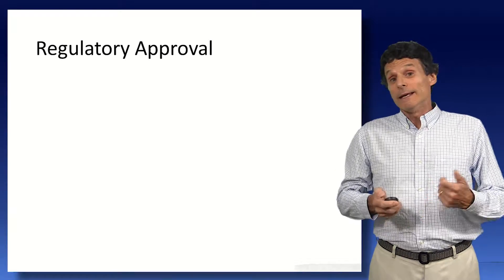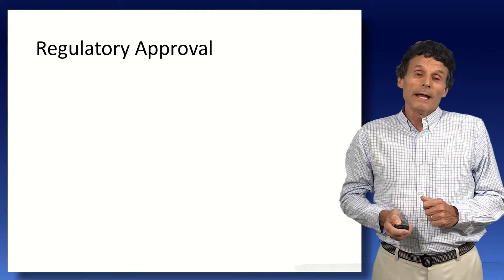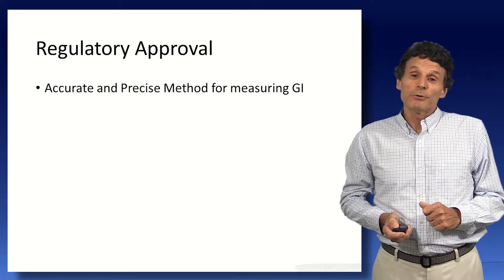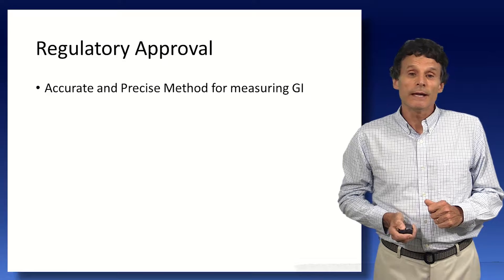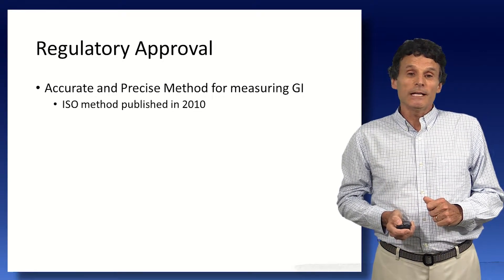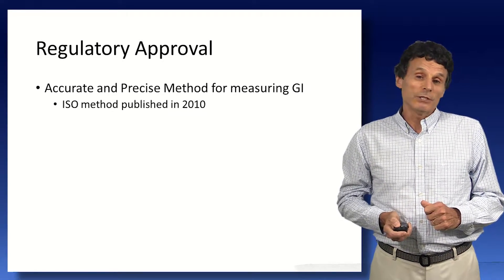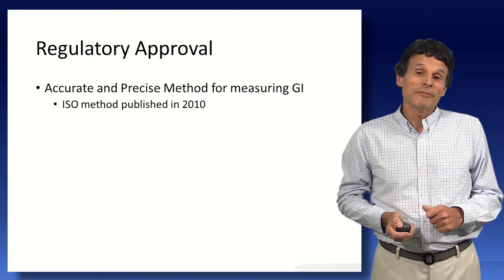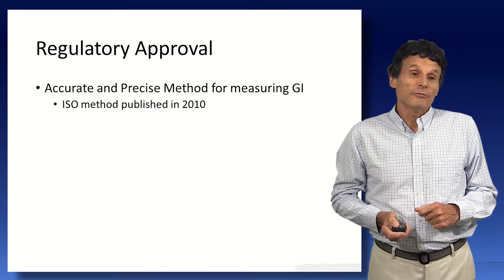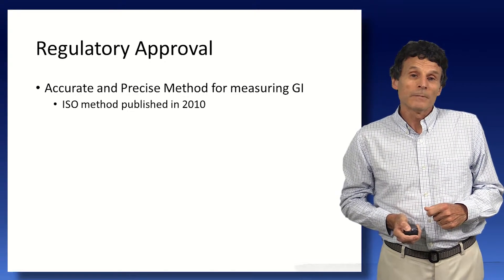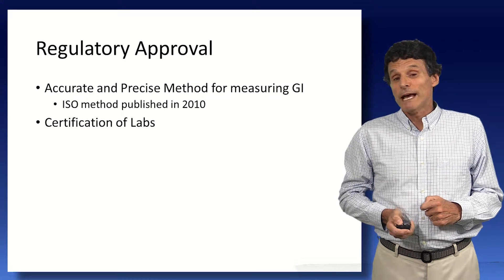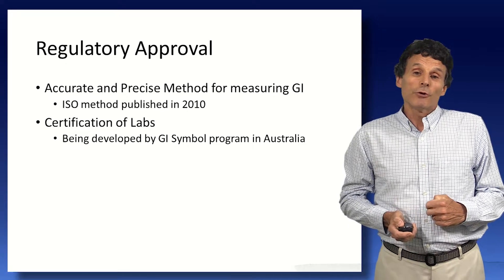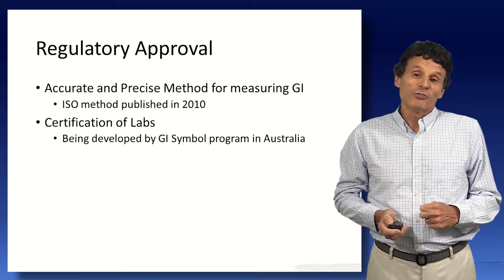We also, people need to be able to find out what the GI values of foods are. And so in order to do that, they need to be on the food label. And so we need regulatory approval. And in terms of that, we need an accurate and precise method of measuring GI. And it's not really widely appreciated, but the International Standard Organization has a method published in 2010, which is in fact accurate and precise enough to meet the standards for food labeling in Canada.